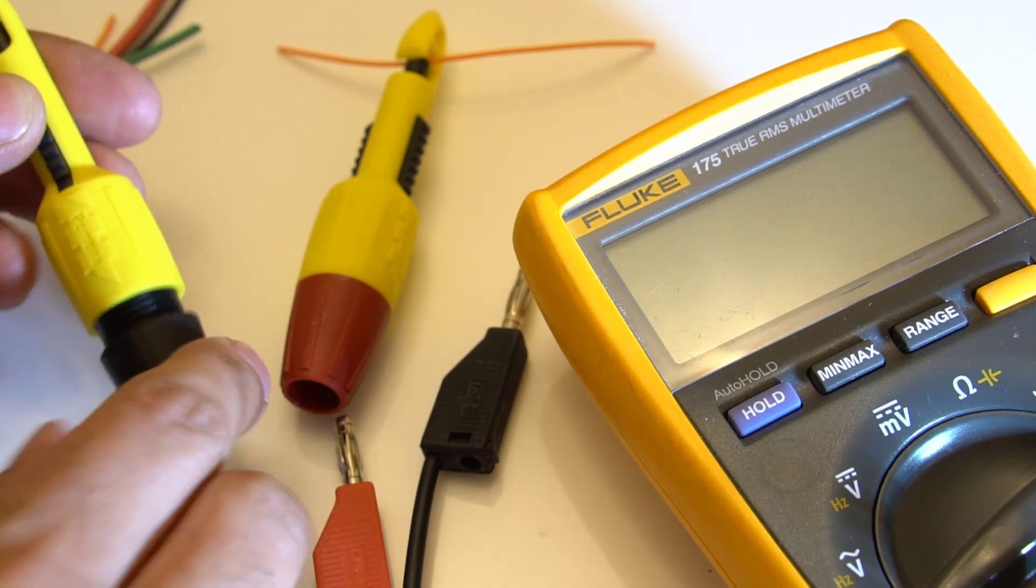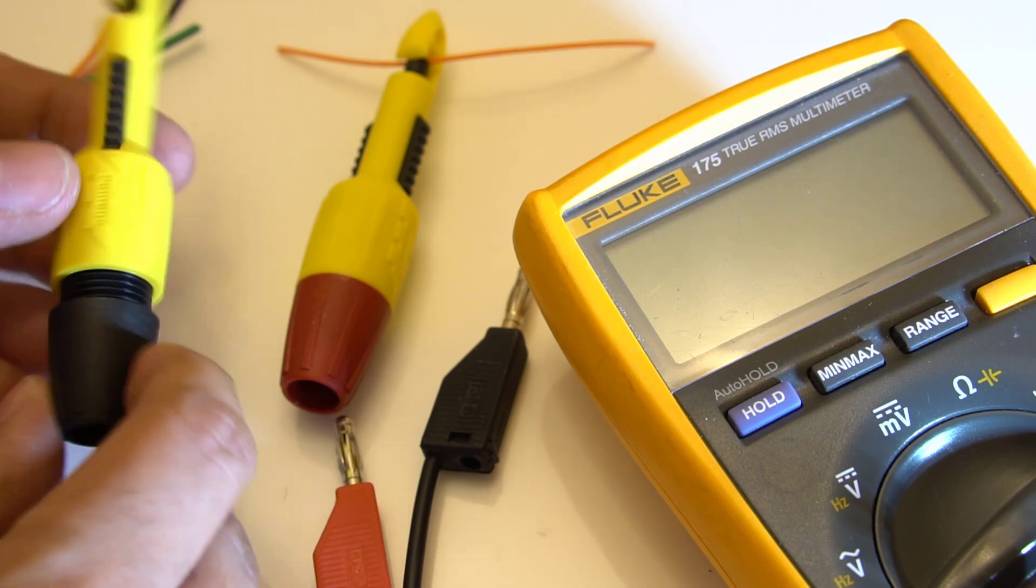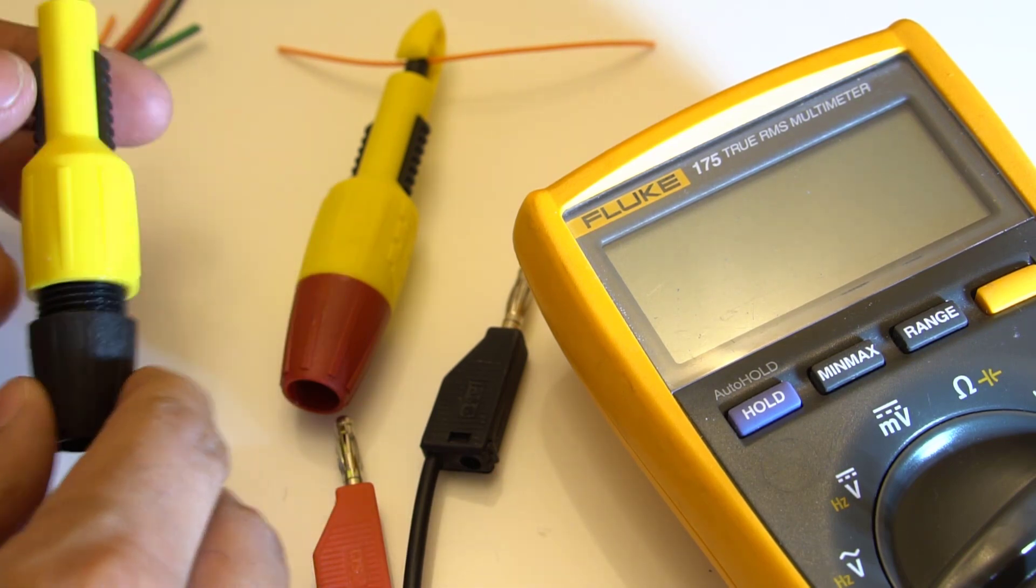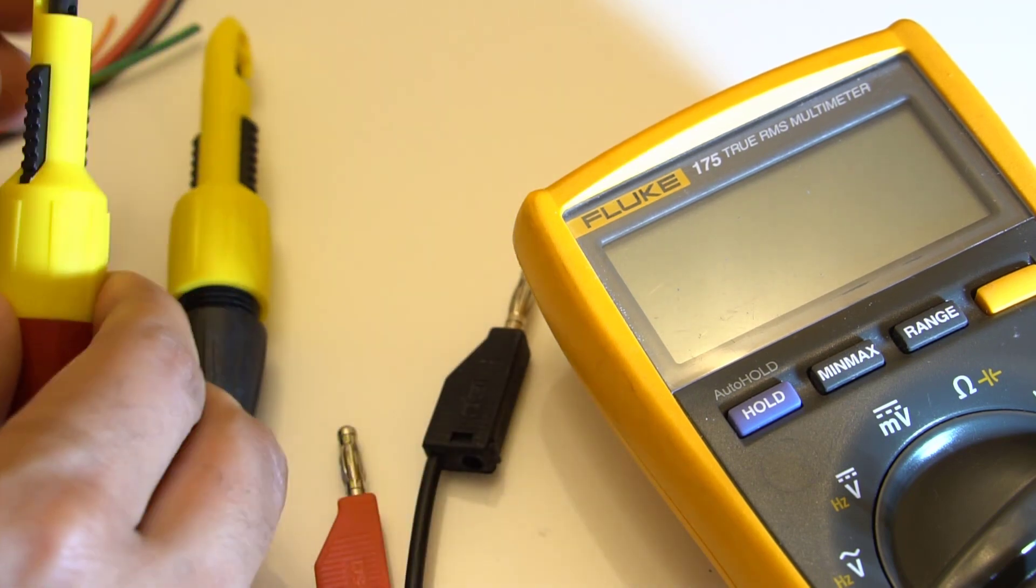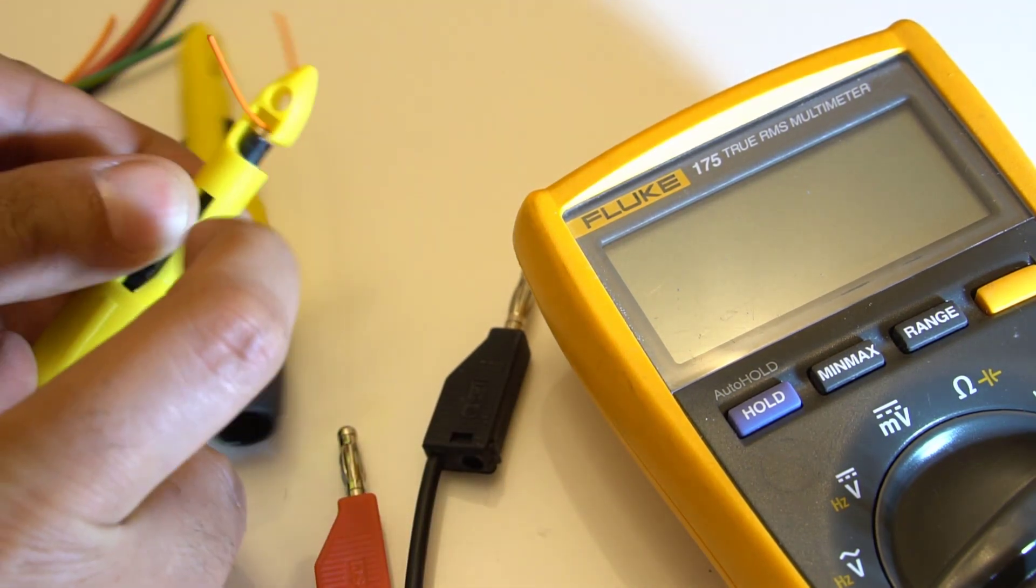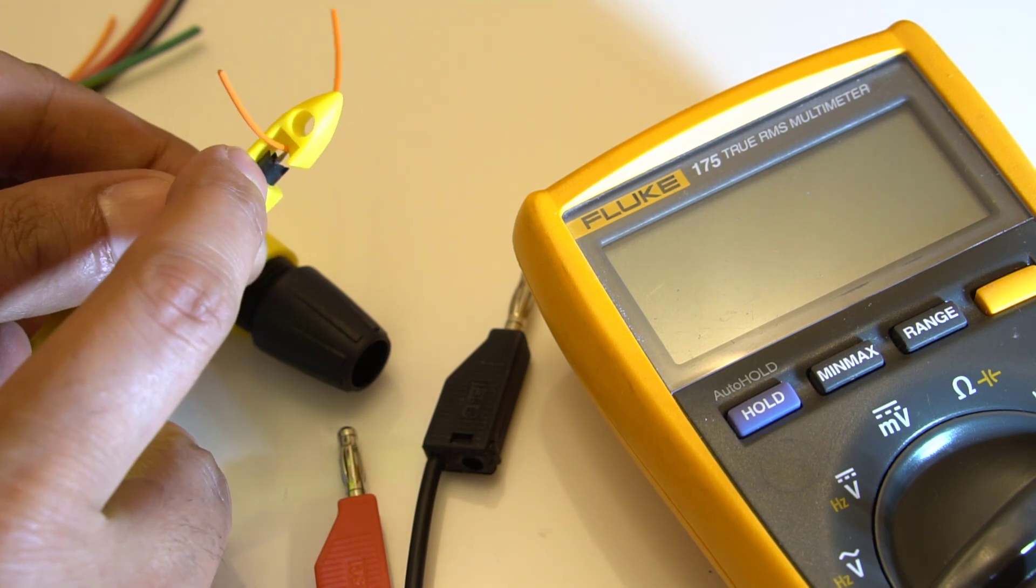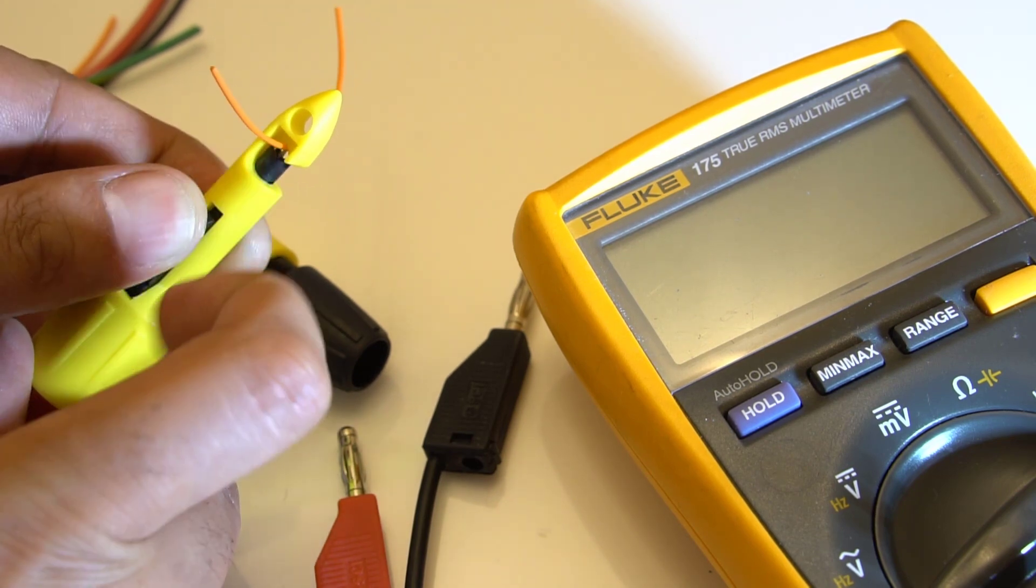These are made by Pomona and what you can do with these, they come in pairs, they're basically for inserting in wires like this and they can be pierced. You can just about see there the piercing there through the insulation.